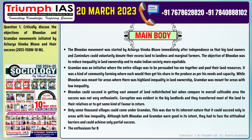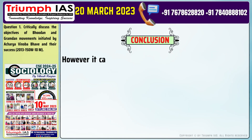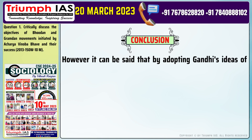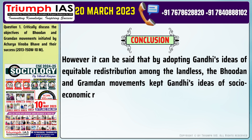Point 5: The enthusiasm for Bhudan ebbed away after 1957, and the idea of Gramdhan did not prove popular in non-tribal areas, which partly accounted for the decline of the movement at the end of the 1950s. However, it can be said that by adopting Gandhi's ideas of equitable redistribution among the landless, the Bhudan and Gramdhan movements kept Gandhi's ideas of socio-economic reconstruction alive.